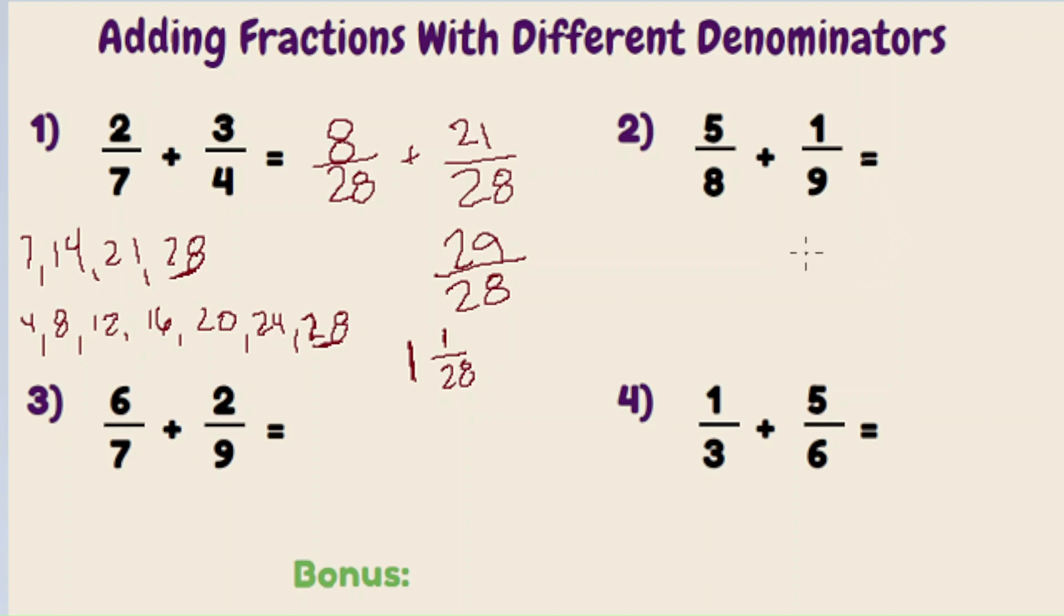Example number two, five-eighths plus one-ninth. So we can start by listing out multiples, but I have a feeling that's going to be a lot of multiples to write out. So another way you could do this is to simply multiply eight times nine, because you know they're both going to be a multiple. Eight times nine is seventy-two. That will be our new denominator.